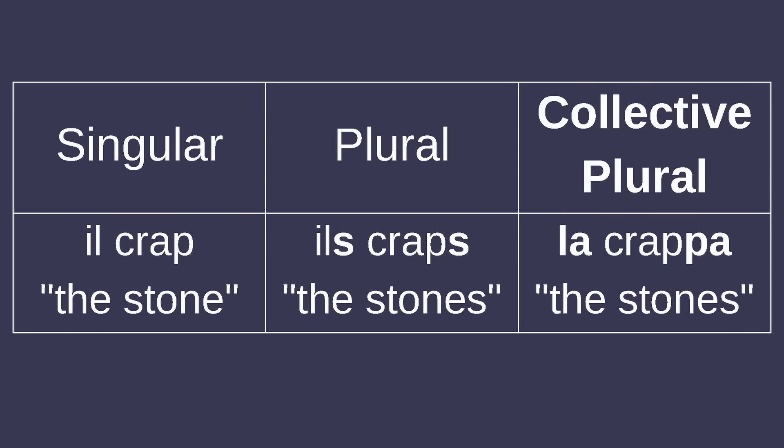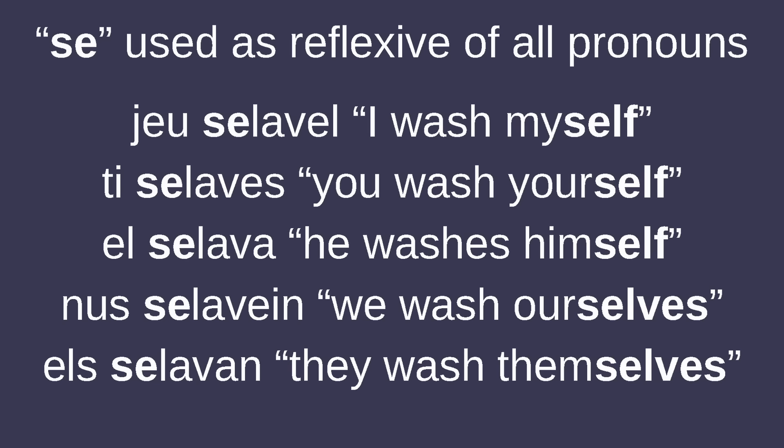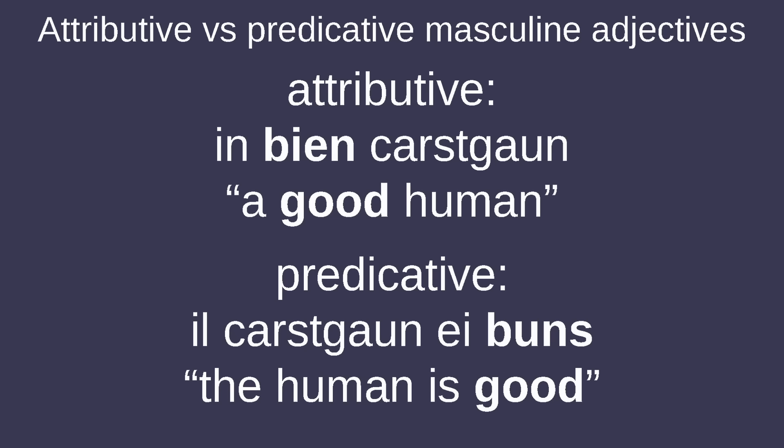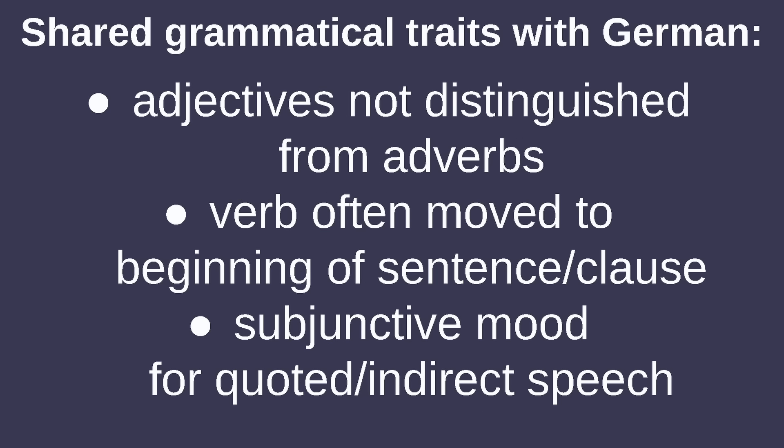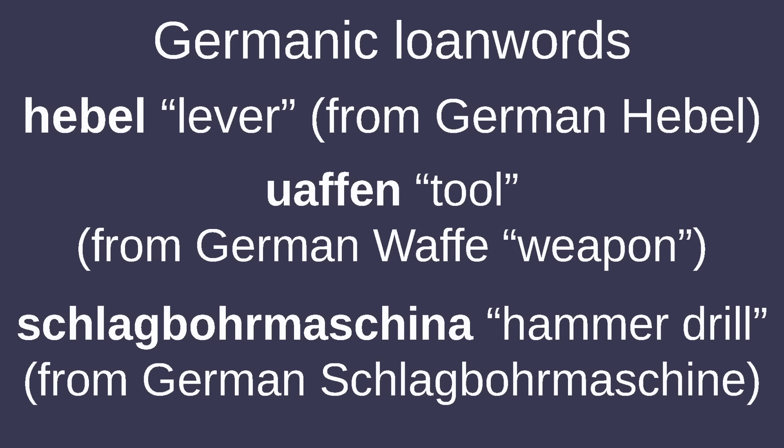Plurals are formed by adding S to the noun, and Romansh has collective plurals which refer to nouns as a whole. All reflexives in Sursilvan use the pronoun 'se,' whereas in most Romance languages it's only used in the third person. Possessive pronouns in Romansh change between the predicative and attributive, though only in the masculine. Interestingly, Romansh also shares some grammatical features with German, such as adjectives not being distinguished from adverbs, the verb being moved to the beginning of a sentence or clause in some contexts, and quoted speech using the subjunctive mood. There are also a lot of Germanic loanwords, especially since most Romansh speakers can also speak German.